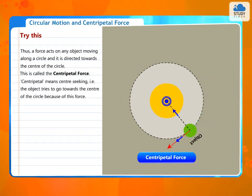Centripetal means center-seeking, that is, the object tries to go towards the center of the circle because of this force.